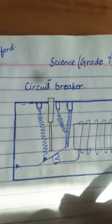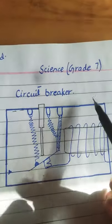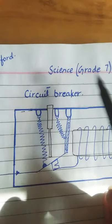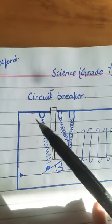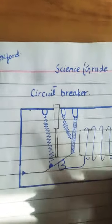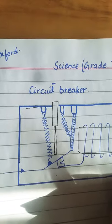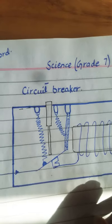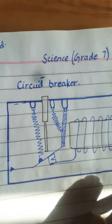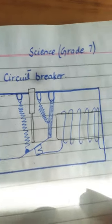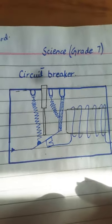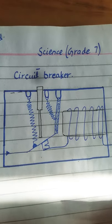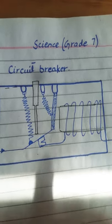Bismillahirrahmanirrahim, assalamu alaikum. Today I am explaining the science of Grade 7 with the Oxford syllabus, and the uses of electromagnets. Here I am explaining in detail the circuit breaker — you can see the diagram of the circuit breaker.